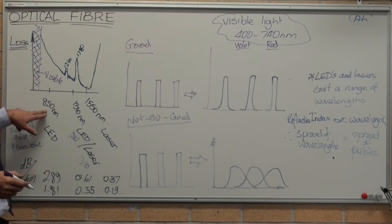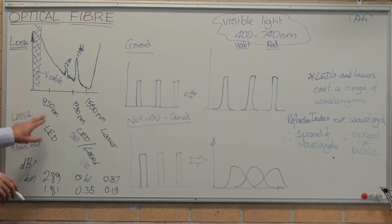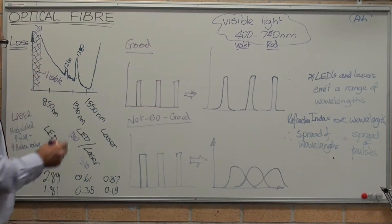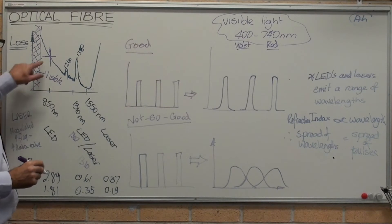At 850 nanometers, there are three key frequencies used. 850 nanometers is produced by an LED. So we've got one sitting about there, that has that sort of a loss level.